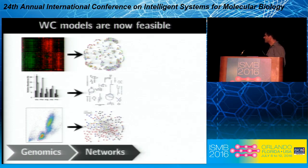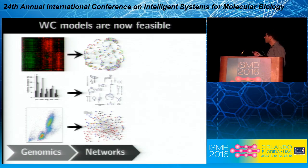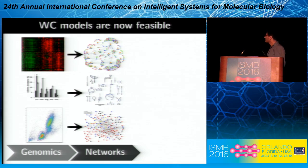The second major advance enabling progress in wholesale modeling is bioinformatics — the ability to take large, high-dimensional genomic data sets, infer networks from them, and then, if we layer on top of that kinetic data, we can begin to build dynamical models of individual pathways.